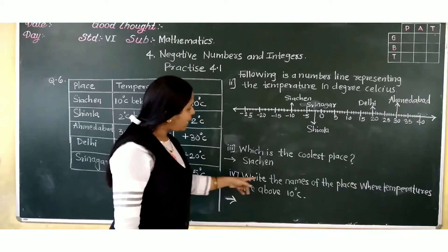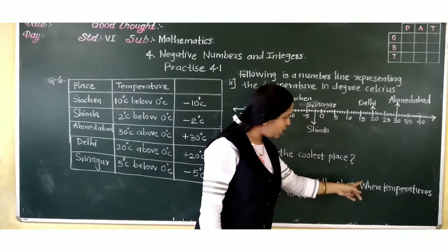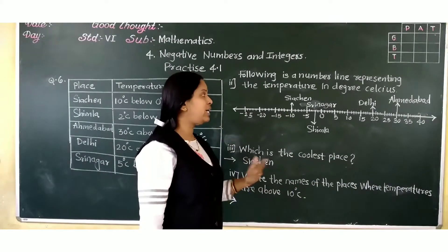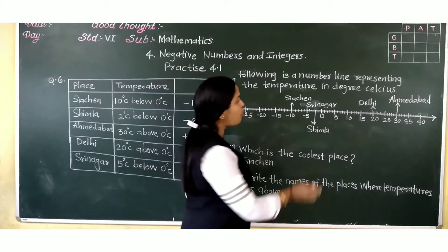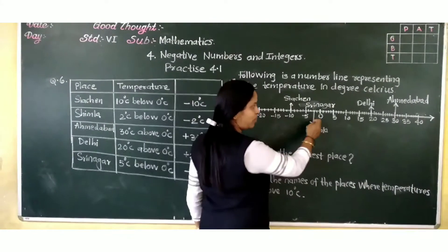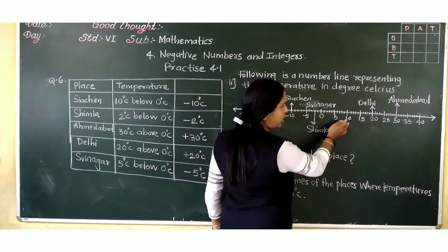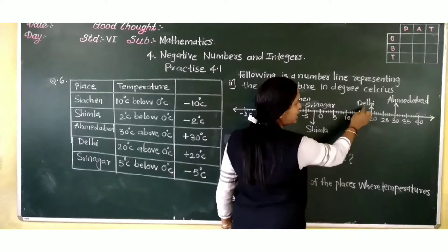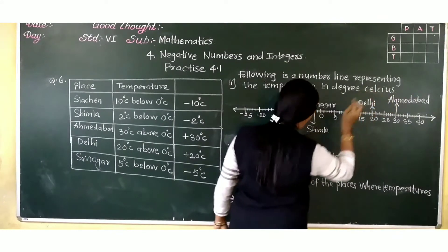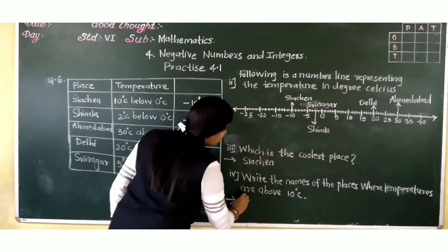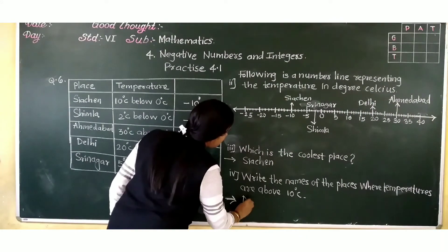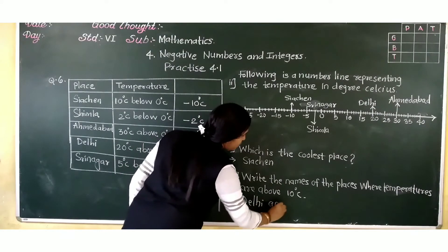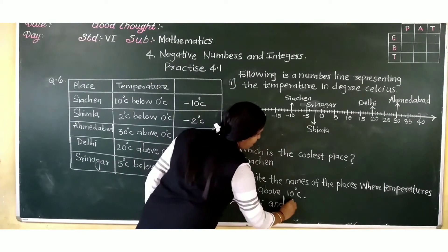Next: write the names of the places where temperatures are above 10 degrees Celsius. Above 10 means plus 10 and beyond. So which cities are there after 10 degrees Celsius? Delhi and Ahmedabad. So the answer is Delhi and Ahmedabad.